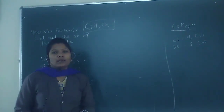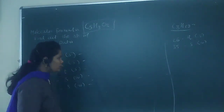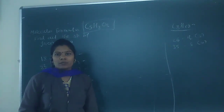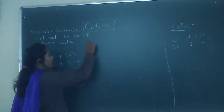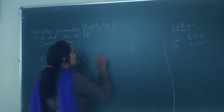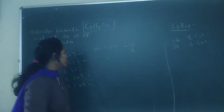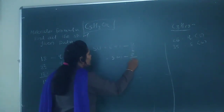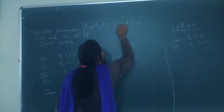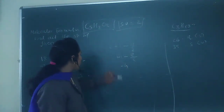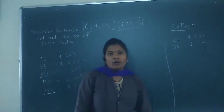First we find the sites of unsaturation, which you already learned in H-1 NMR spectroscopy. The formula is: sites of unsaturation = C + 1 − H divided by 2. With 5 carbons and 8 hydrogens: 5 + 1 − 8 divided by 2 equals 6 − 4 = 2. So there are 2 sites of unsaturation, indicating 2 double bonds in the molecule.